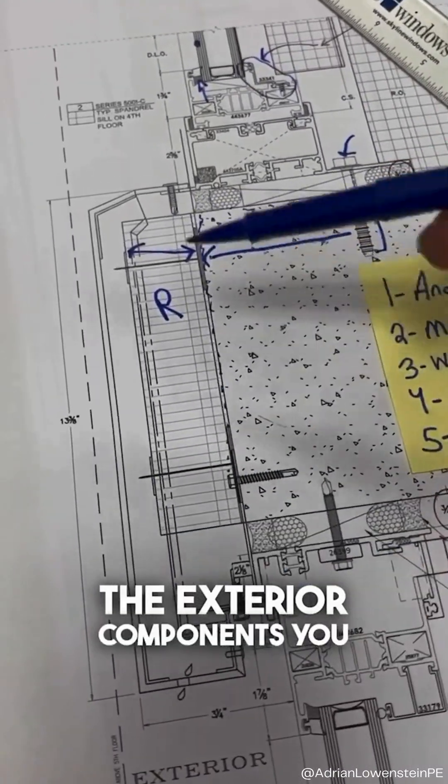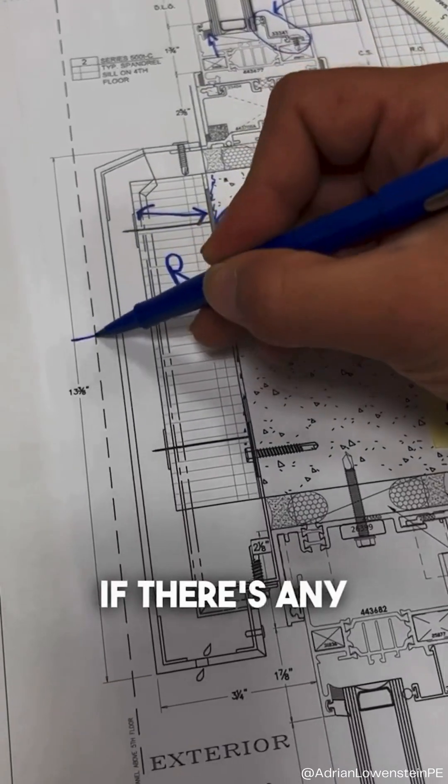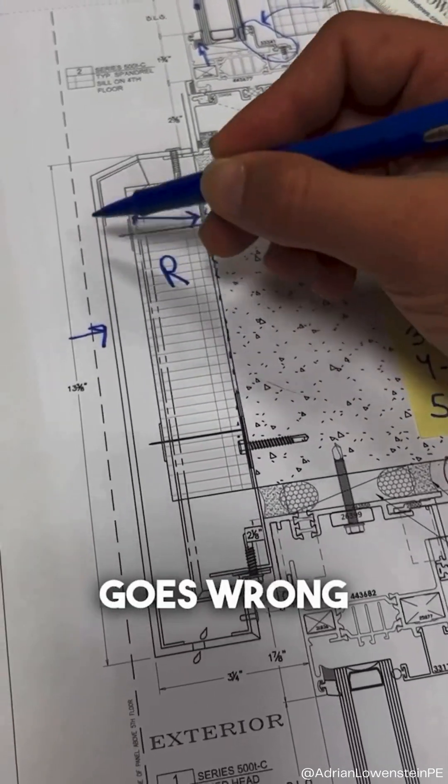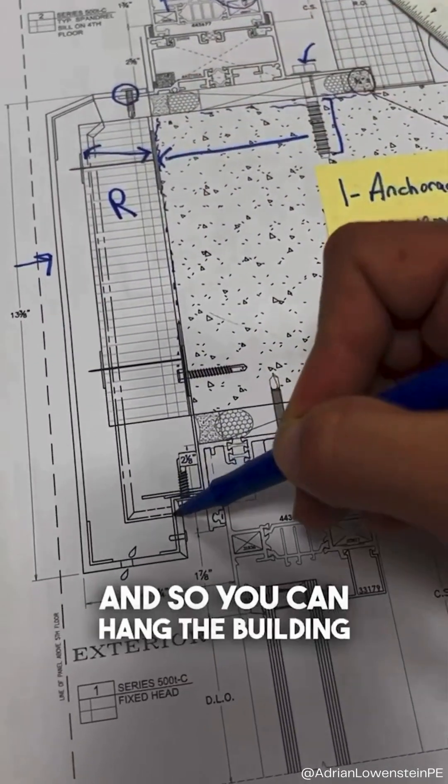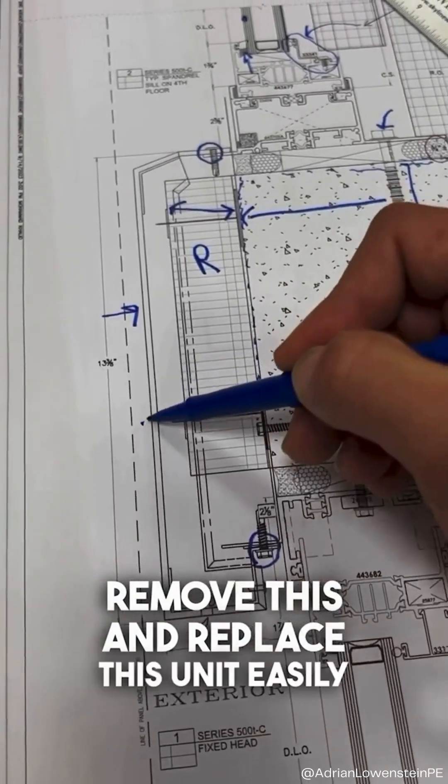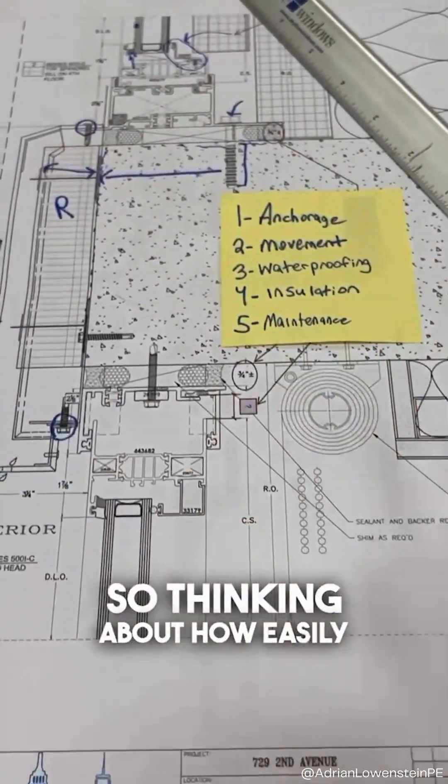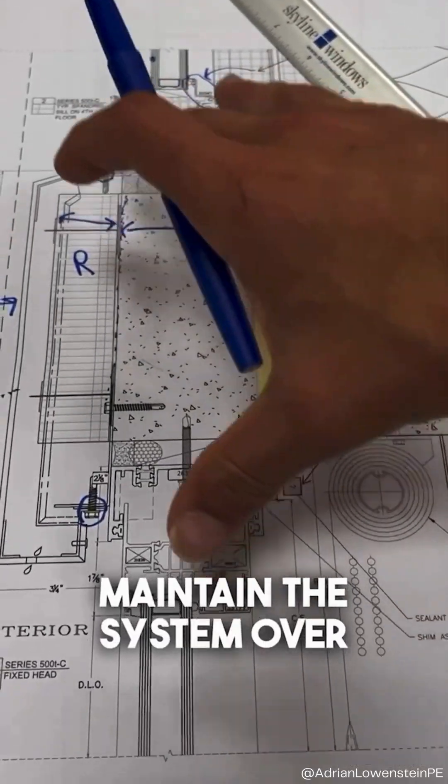The exterior components, you could see, for instance, this slab edge cover. If there's any damage to it or something goes wrong, the fasteners are exposed. And so you can hang the building from a rig, remove this, and replace this unit easily. So thinking about how easily can we maintain the system over time.